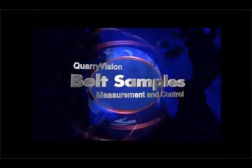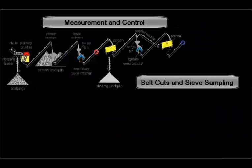The industry's mainstay measurement tool has been belt cuts and sieve sampling. These methods are widely accepted as a tool for product quality control.